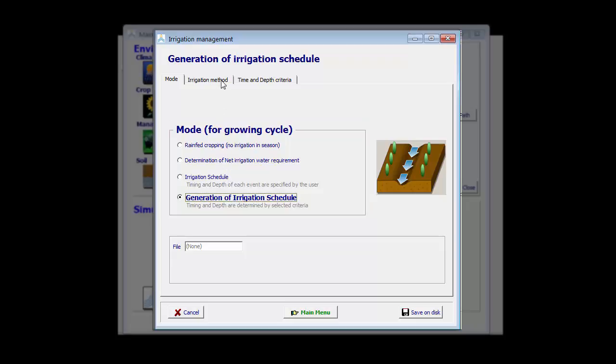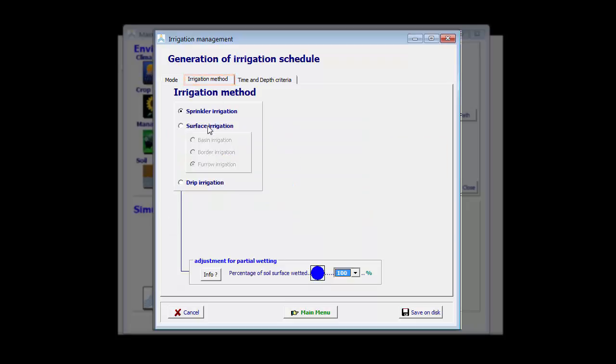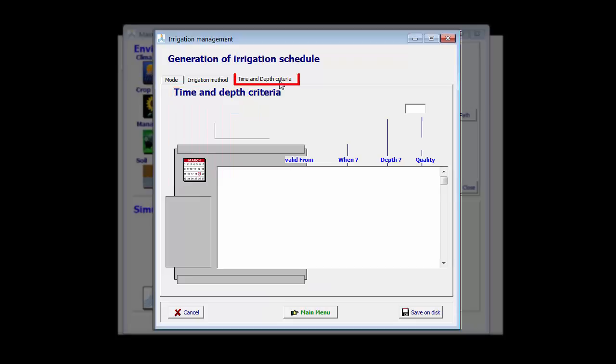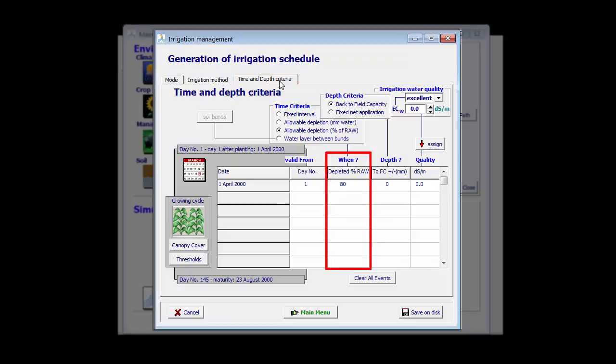Let's assume that in this example, the irrigation method is surface irrigation and more precisely furrow irrigation. In this screen, I specify the time and the depth criteria.